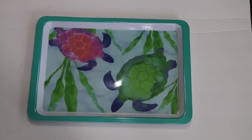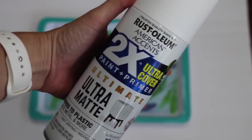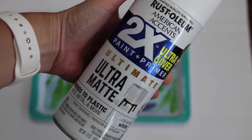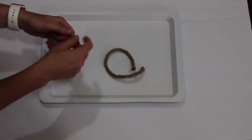For my first project, I grabbed this tray with cute little sea turtles on it and I used some white spray paint. I'm using the Rust-Oleum Ultra Matte in white. I took the tray outside and gave it two coats until I could not see the sea turtles anymore. Once it was completely dry, then I brought it back inside.